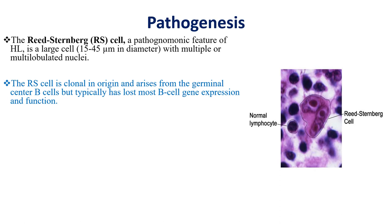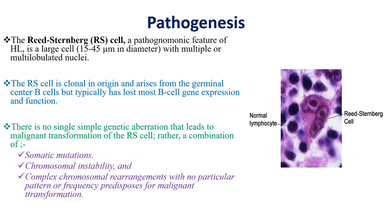The cells are clonal in origin and arise from germinal center B cells, but typically have lost most B cell gene expression and function. There is no single simple genetic aberration that leads to malignant transformation of the Reed-Sternberg cell; rather, a combination of somatic mutations, chromosomal instability, and complex chromosomal rearrangements with no particular pattern or frequency predisposes for malignant transformation.